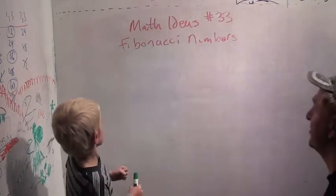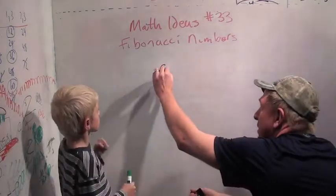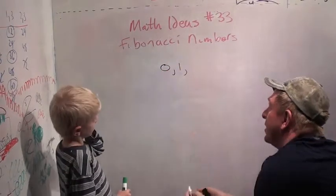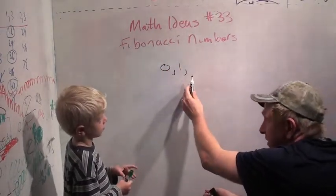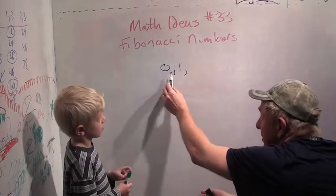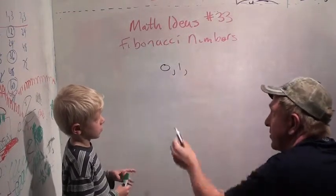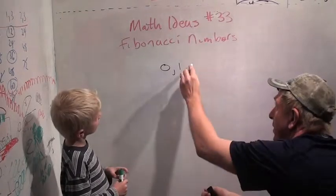Okay, so here's how the Fibonacci numbers are defined. You start with zero, and then one, and the next number you get by summing up the previous two. So you add them together. So zero plus one is? One.